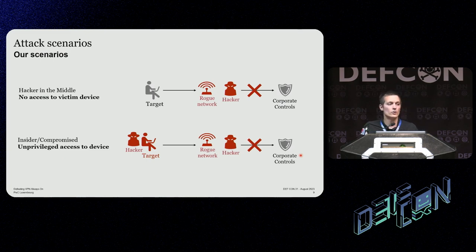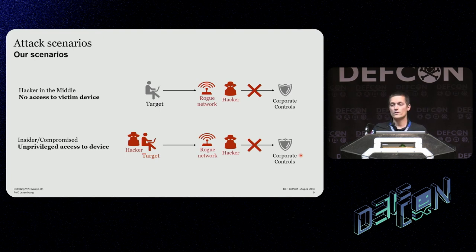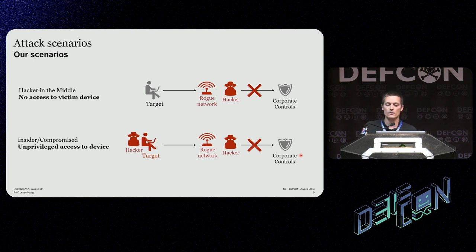We know there have been many talks about exfiltration with sound, electromagnetic noise, pixels, QR codes, and so on. They are great but we are really interested in simple things with high throughput — we want to be able to exfiltrate big files, so we need much more effective attacks. The scenarios we consider: hacker in the middle where the hacker does not have access to the target device, or an attacker or malicious insider with access to the device who can run commands on the laptop as well as control the network.